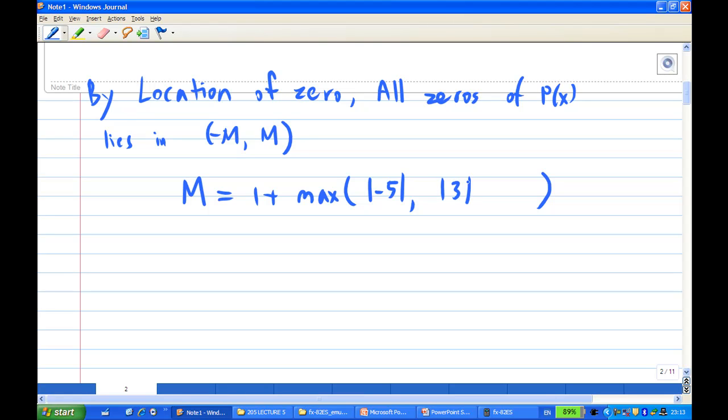We're going to put it down. Absolute value of minus 5, absolute value of 3. And so, this is the maximum of these two is 5. And so, M is equal to 6.